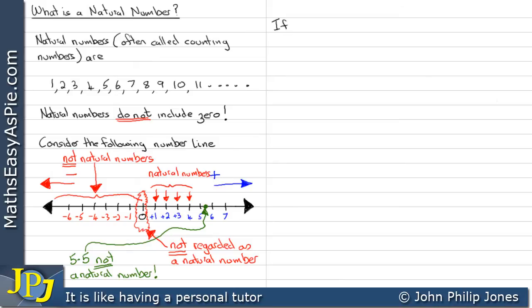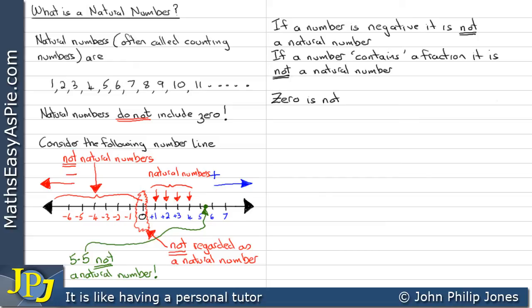So let's be clear about natural numbers. If a number is negative, it is not a natural number. Simple as that. If a number contains a fraction, it is not a natural number. Zero is not a natural number.